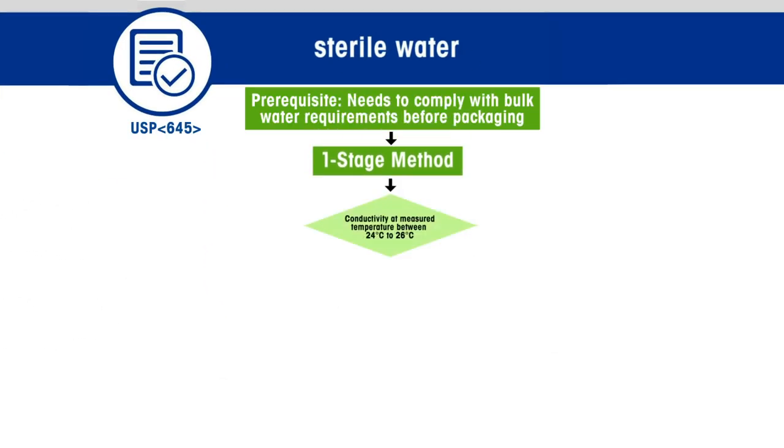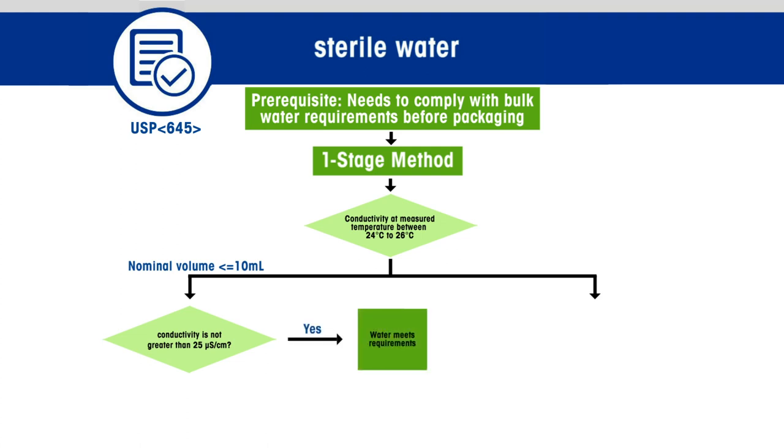Maintain the sample temperature between 24 and 26 degrees Celsius while stirring to obtain carbon dioxide equilibrium. Then measure the conductivity. The passing criteria depends upon the nominal sample volume. You may need to collect the water sample from multiple containers to reach enough volume to measure the conductivity. If the nominal sample volume is less than or equal to 10 milliliters, and if the conductivity is not greater than 25 microsiemens per centimeter, the water meets the requirements.